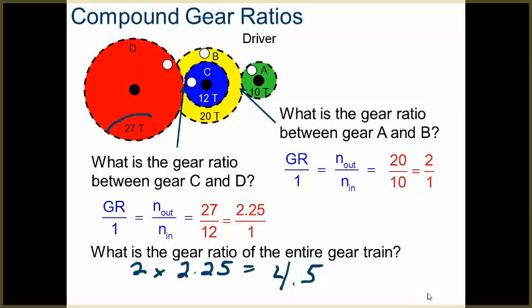Notice how I can no longer just take my output divided by my input. I'm not going to get the same answer. So with a compound gear ratio, you do have to do a little bit more work and look at which gears are actually mating to each other.